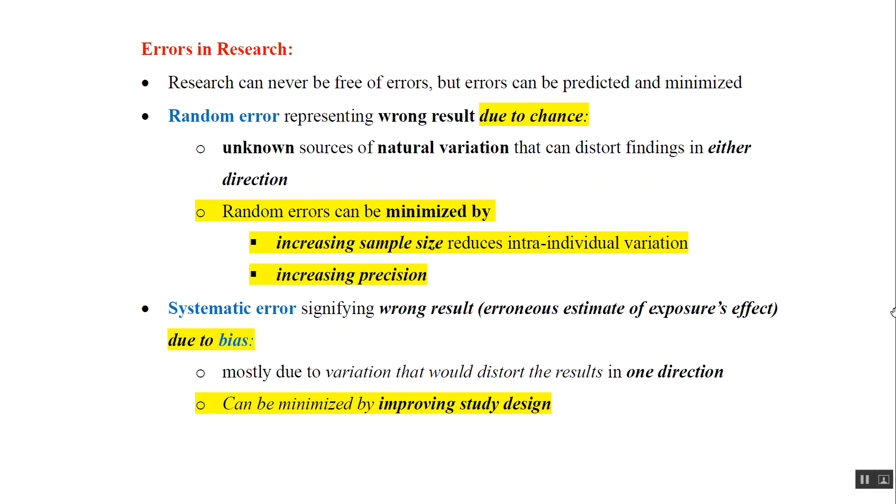Systematic error signifies wrong results or erroneous estimates of exposure's effect, usually due to bias. Systematic errors distort results in one direction and can be minimized by improving study design.